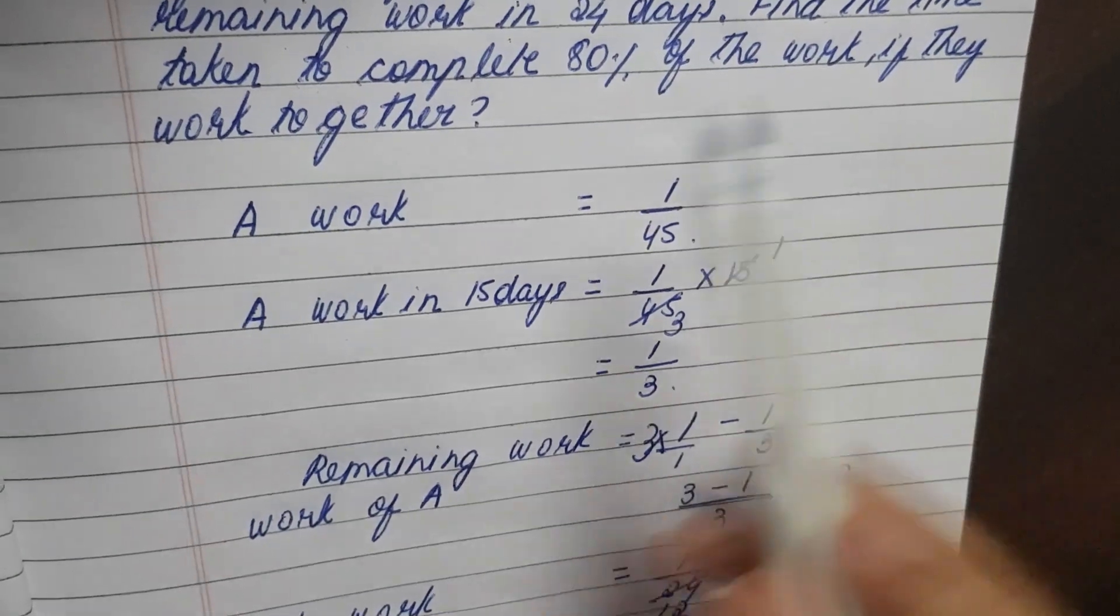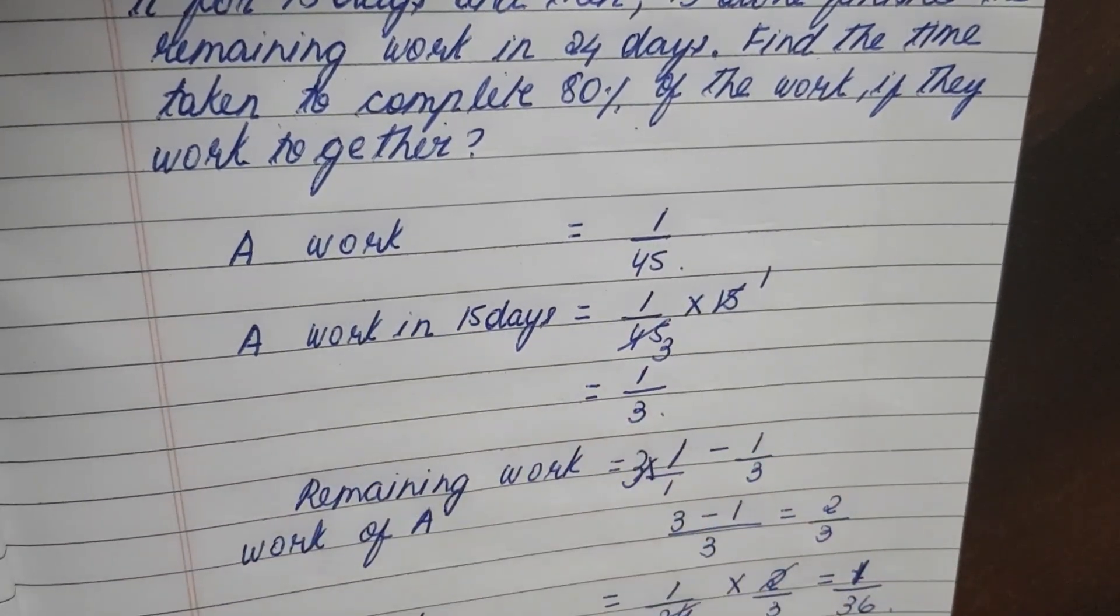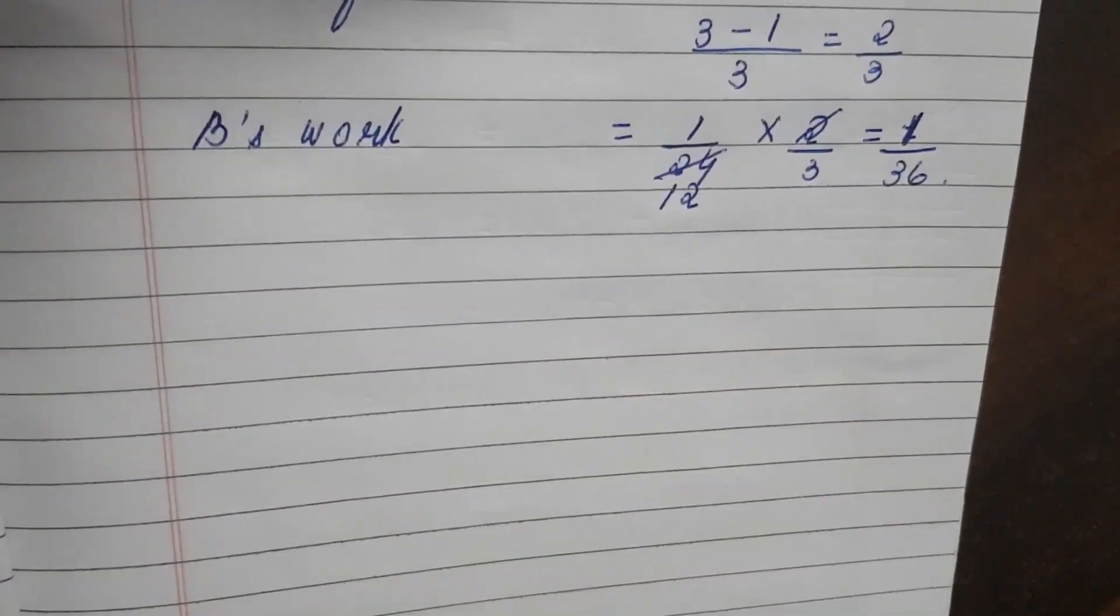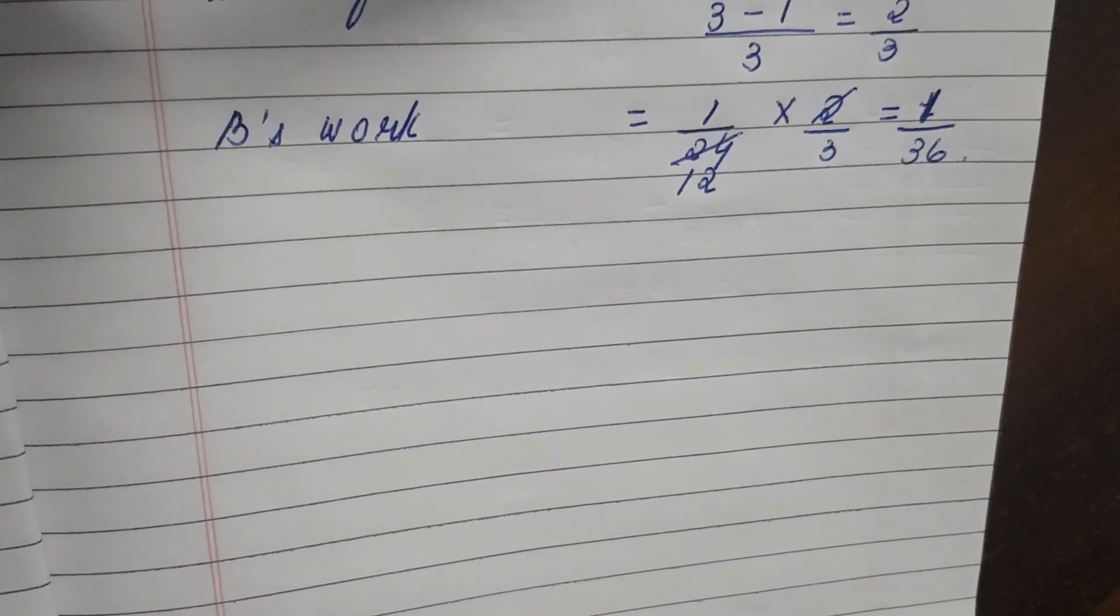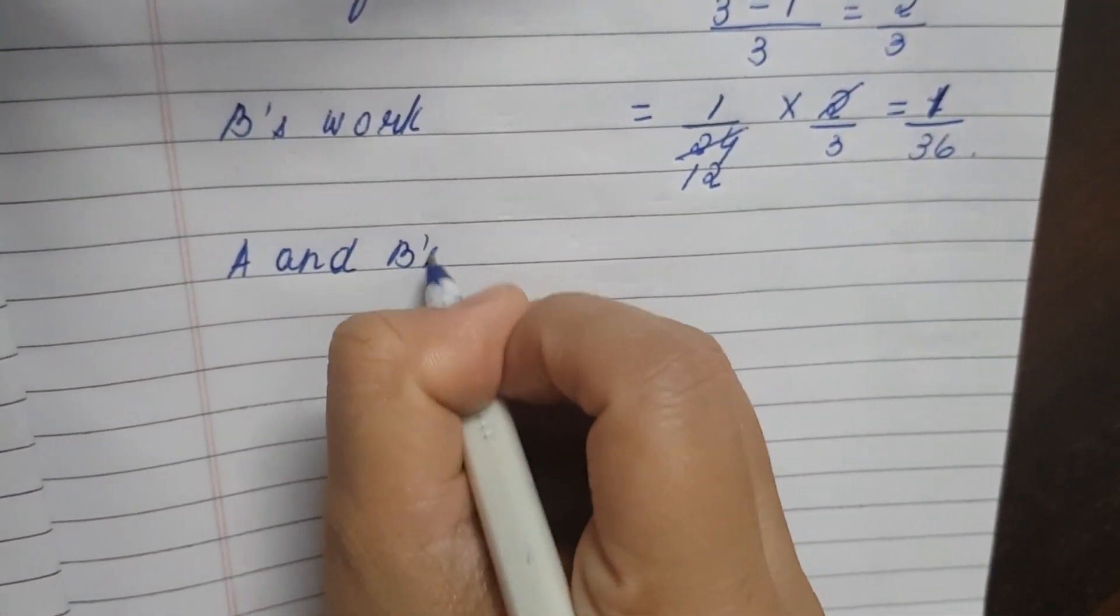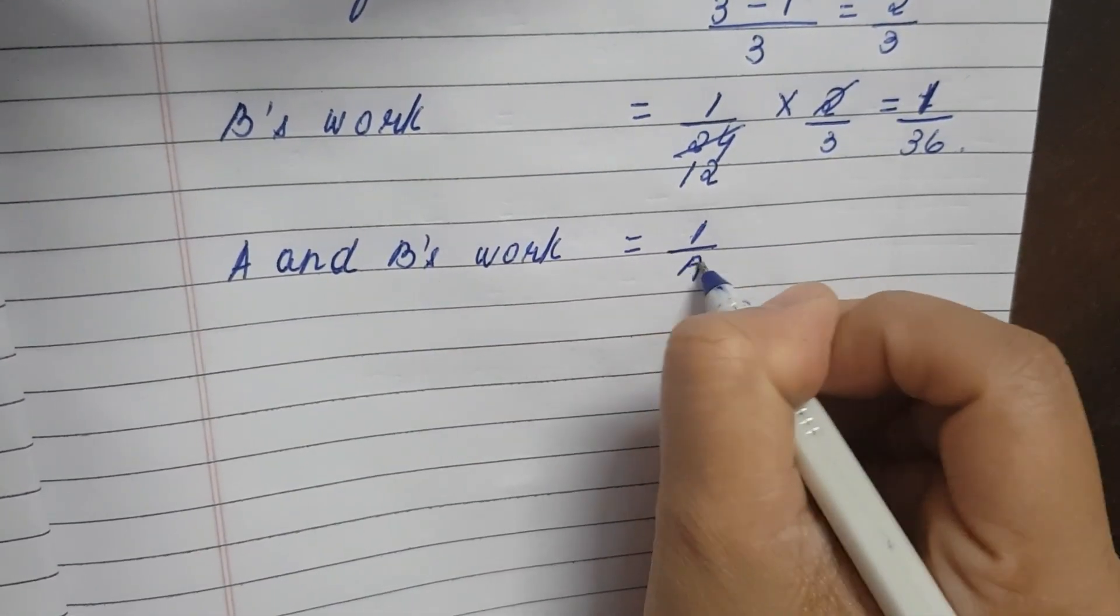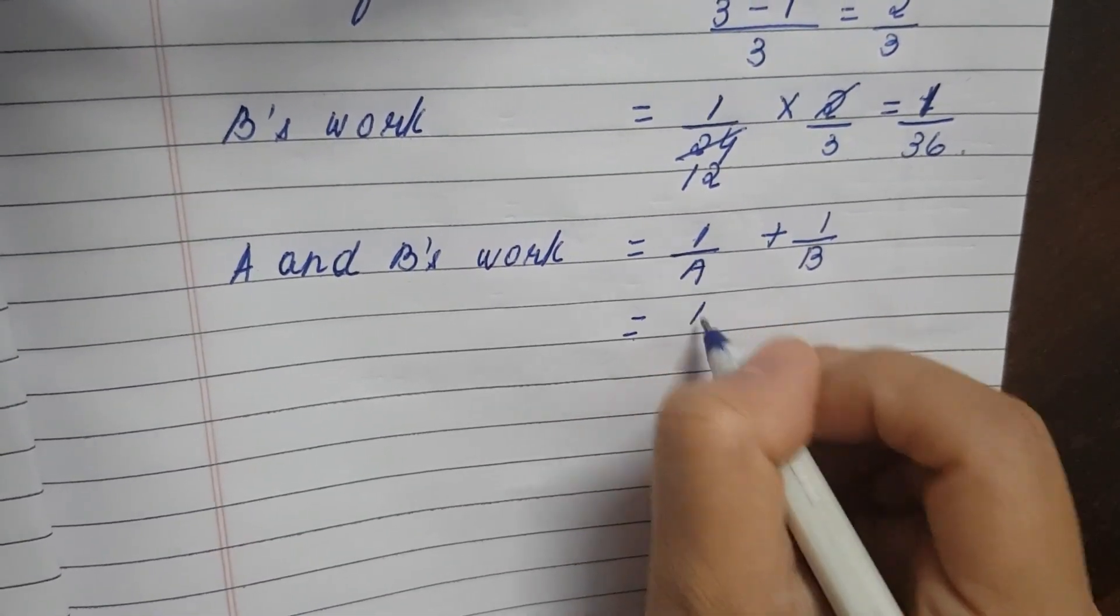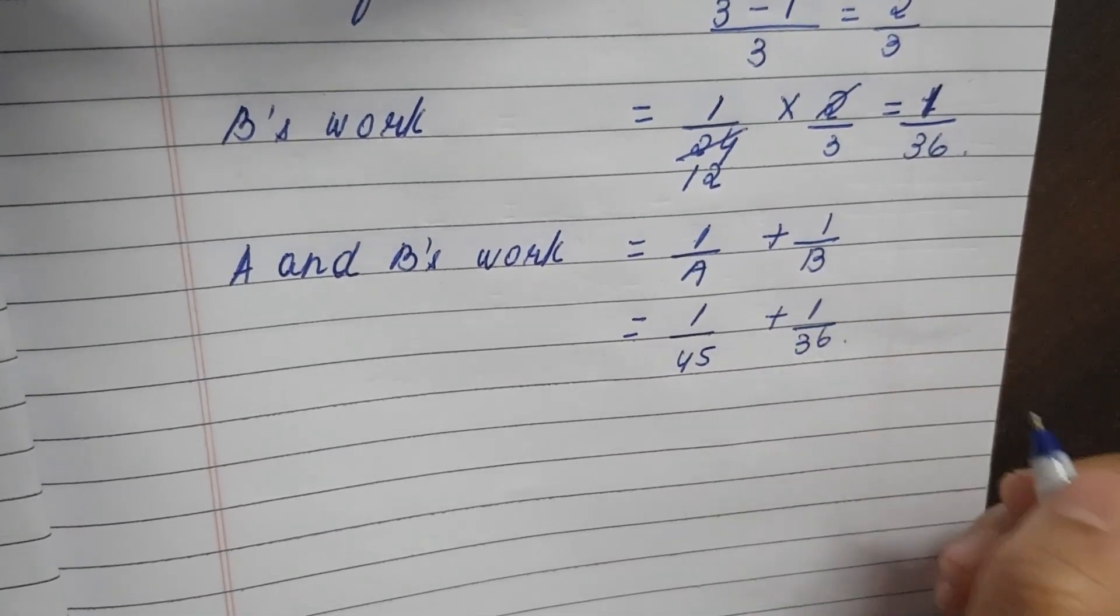Find the time taken to complete 80% of the work if they work together. So if they work together, 80% of the work how to find. First, together, how much time will they take to complete a work. So A and B's work is equal to 1 by A plus 1 by B. So 1 by A, A is 45 days and B is 36 days.